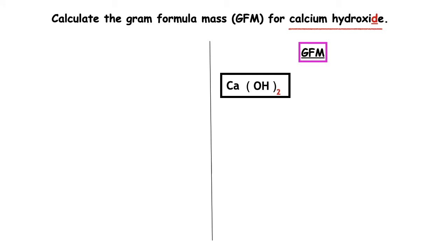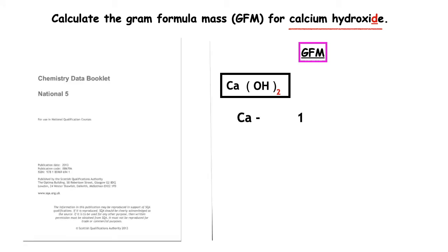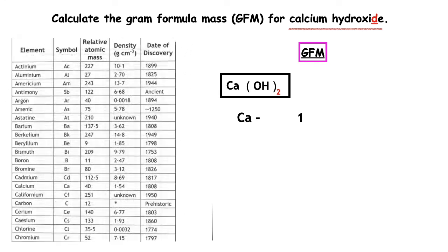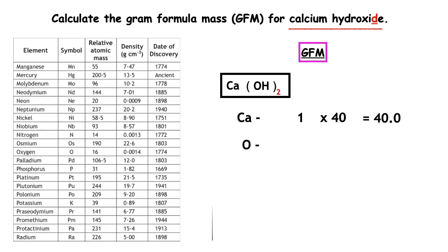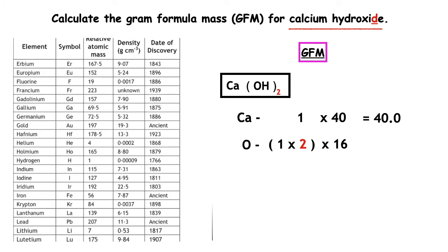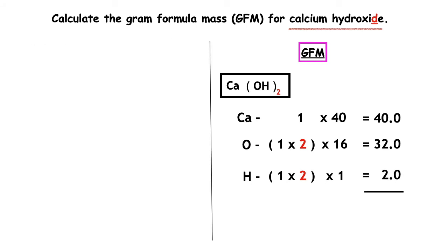To work out the GFM, we take down each of the entities. Calcium, symbol Ca: we have 1, multiplied by the relative atomic mass of 40 from page 7. 1 times 40 equals 40. Oxygen, symbol O: we have 1 inside the bracket multiplied by 2 outside, multiplied by the relative atomic mass of 16. 1 times 2 is 2; 2 times 16 equals 32. Hydrogen, symbol H: we have 1 inside the bracket multiplied by 2 outside, multiplied by the relative atomic mass of 1. 1 times 2 is 2; 2 times 1 is 2. When we add up those numbers, we get a GFM of 74 grams.